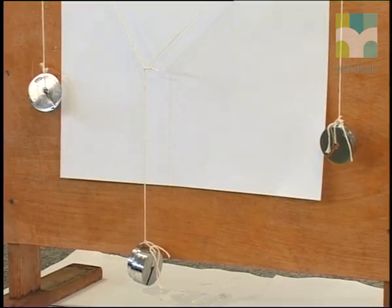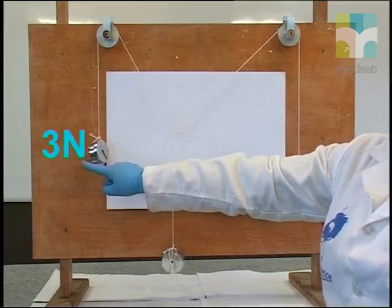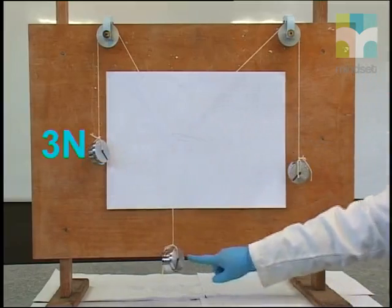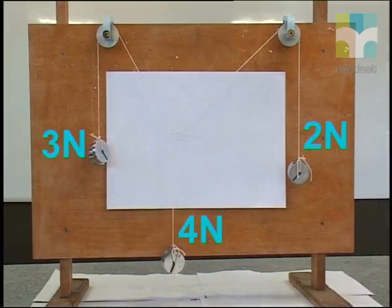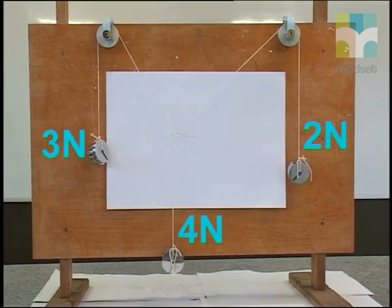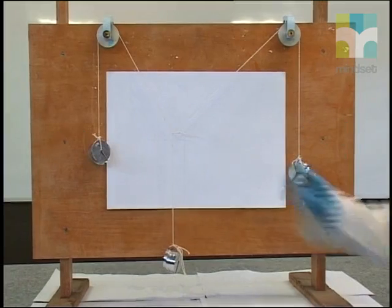We know what the weights are. This one on the left is 3 newtons. This one in the middle is 4 newtons. And this one on the right is 2 newtons. So we know what the forces in the strings are.